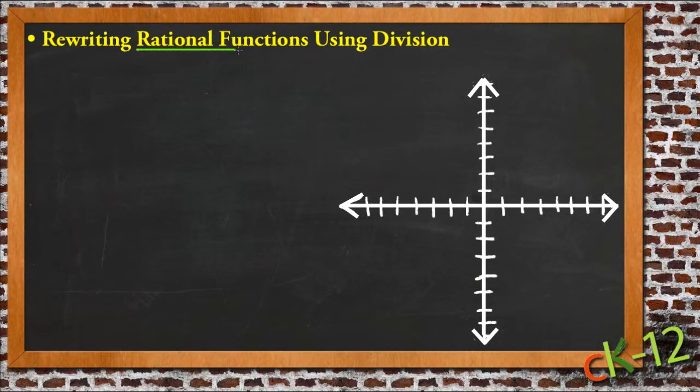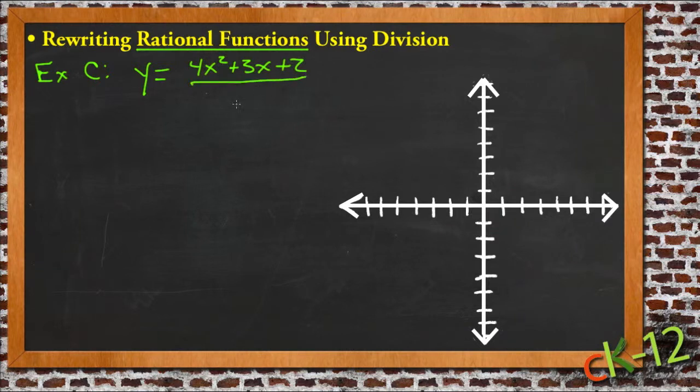So what I want to do at this time is talk a little bit about why we're doing what we're doing when we divide the numerator by the denominator for these rational functions. I'm going to use the information from example C as our framework for discussion here, and it is y equals 4x squared plus 3x plus 2 over x minus 1.